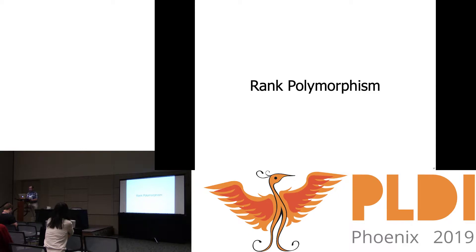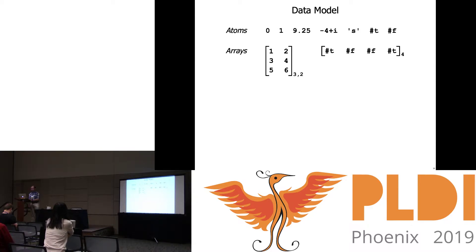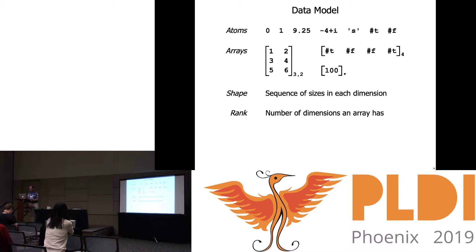Starting from rank polymorphism itself: the data model in a rank-polymorphic language is a two-level thing where you have atoms and arrays. Atoms are your very basic data type — numbers, characters, booleans — and arrays are aggregate structures made of atoms. So you might have a three-by-two matrix, a vector of booleans, and a scalar is just a zero-dimensional array. The shape is an array's sizes in each dimension given as a sequence of numbers, and the rank is the number of dimensions an array has, hence the phrase rank polymorphism.